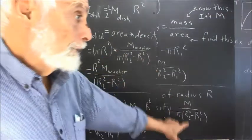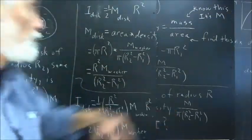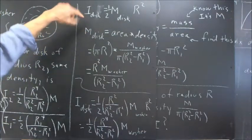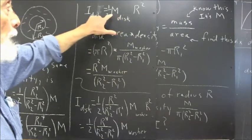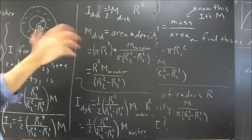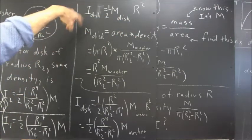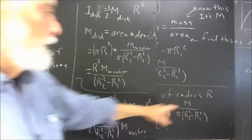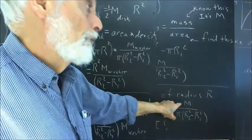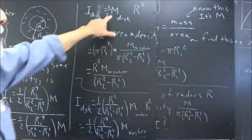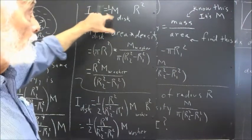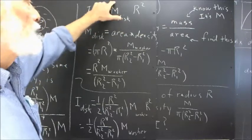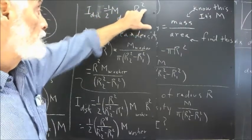Now, accepting that this is the density of the washer, we're going to find the moment of inertia of a disk of radius r and mass m. And to be explicit, we don't want to confuse the m here, which is the mass of the washer, with the mass of the disk. So we're going to say the moment of inertia of the disk is one-half the mass of the disk times r squared.